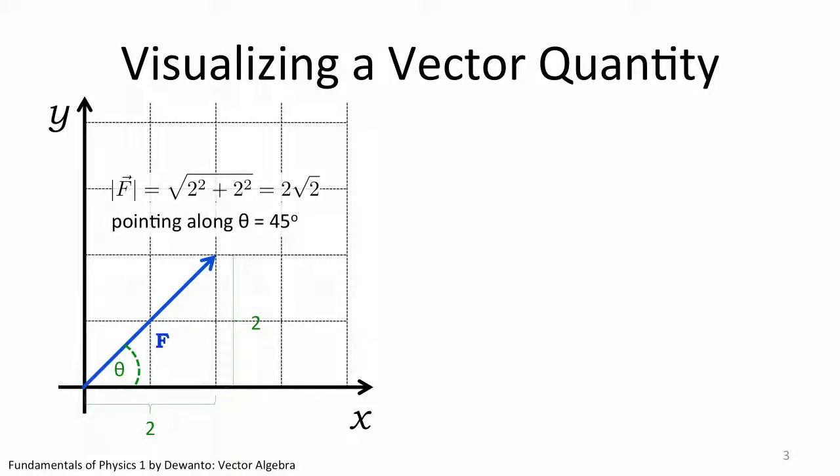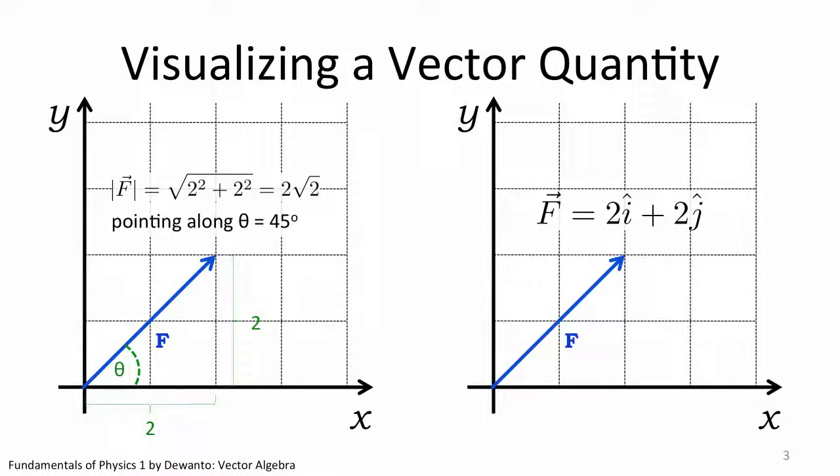In conclusion, you can describe a vector by stating its length in reference to its magnitude and the angle it makes with the adjacent positive x-axis in reference to its direction. Do note that it is by convention that we use the angle that is adjacent to the positive x-axis to indicate the direction of the vector. But this is not the only way to describe a vector.